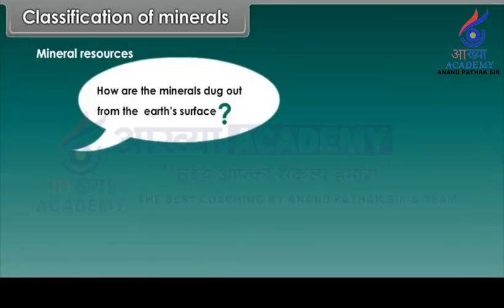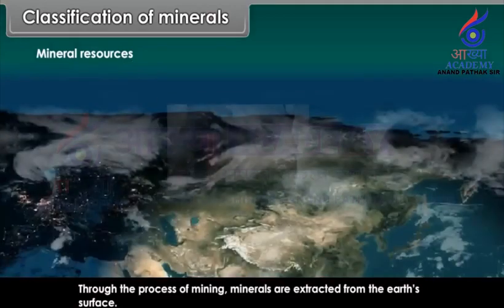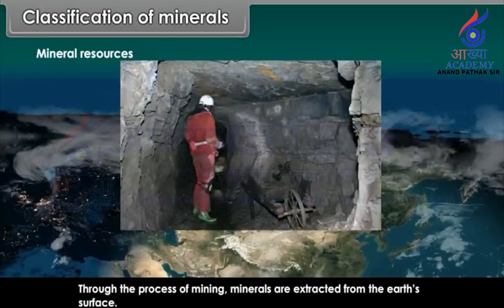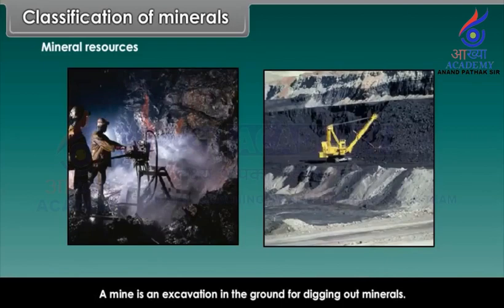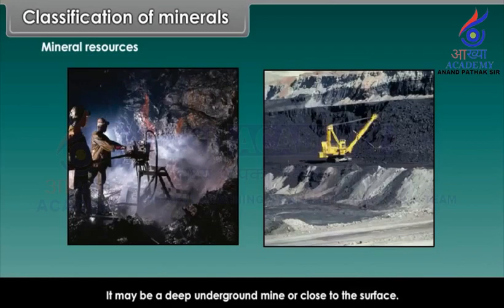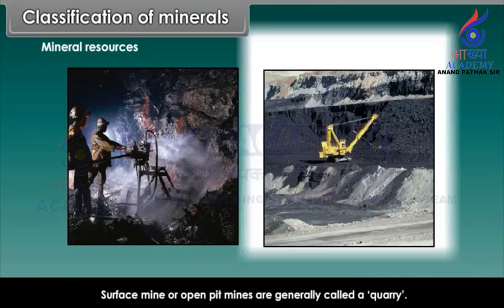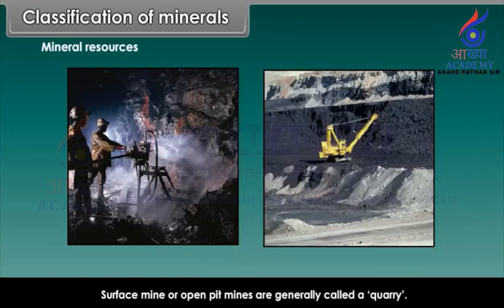How are minerals dug out from the earth's surface? Through the process of mining, minerals are extracted from the earth's surface. Extracting commercially valuable minerals from the earth is called mining. A mine is an excavation in the ground for digging out minerals. It may be a deep underground mine or close to the surface. Surface mines or open pit mines are generally called a quarry.